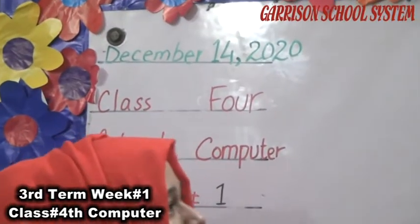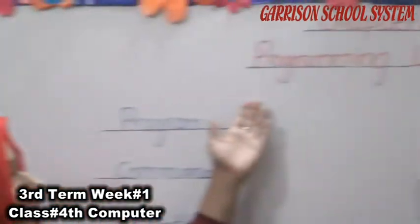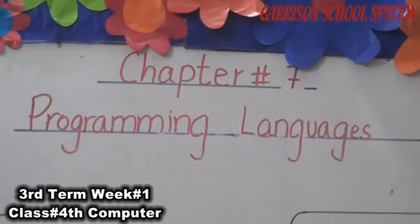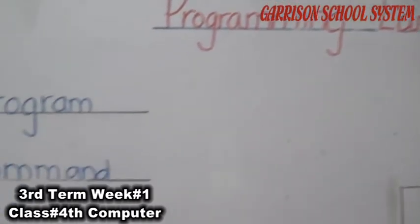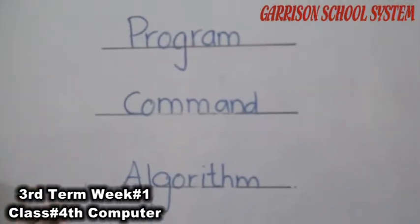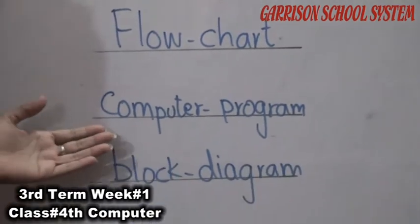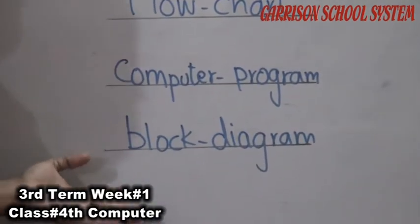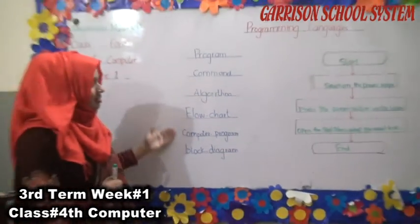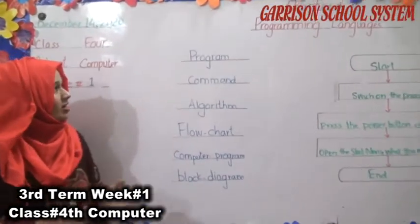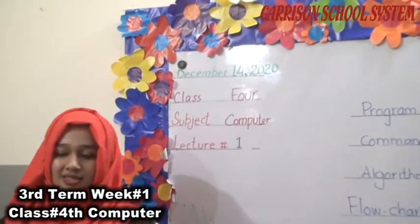In this chapter we will learn: What are programming languages? What is a program? What is a command? What is an algorithm? What is a flowchart? What is a computer program? And what is a block diagram? In this chapter we can learn these points and be able to learn different types of programming languages.